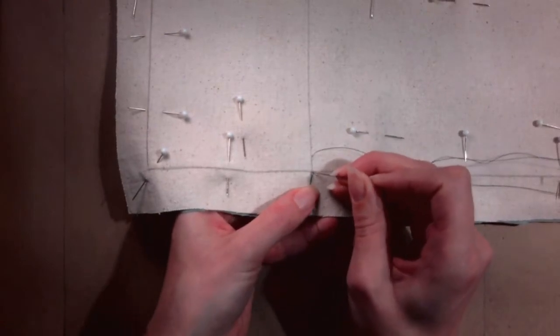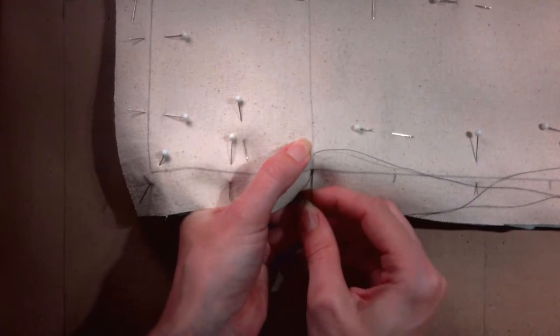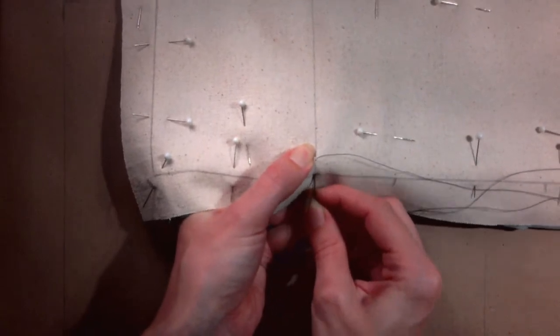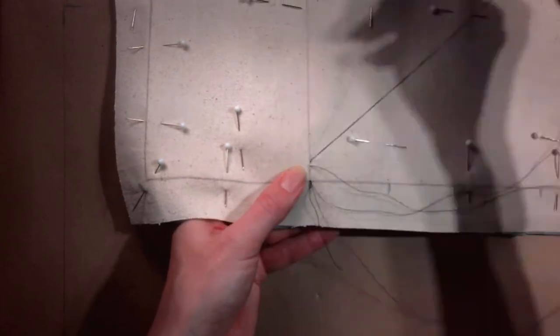Create a tailor's tack to secure the end. Go back down just in front of where you went down the first time and come back up just past where you came back up the first time. Pull until the thread is taut.